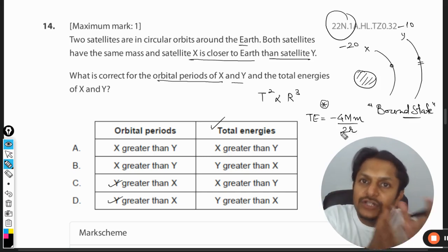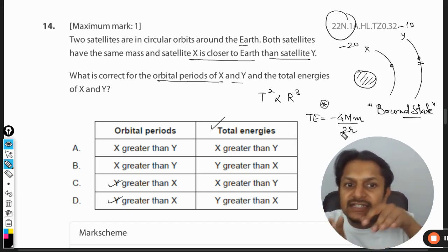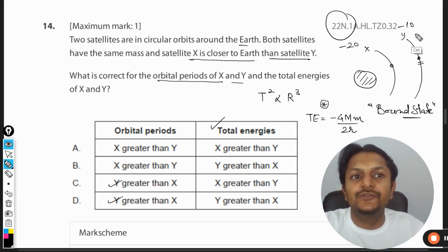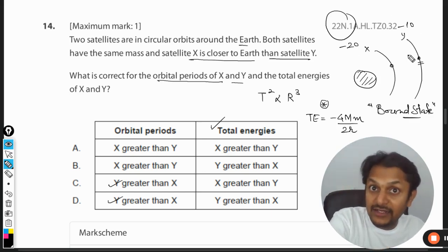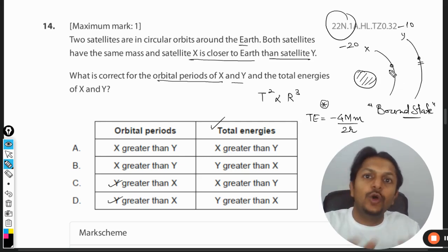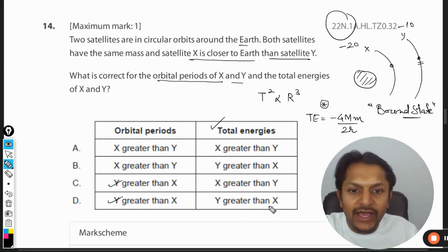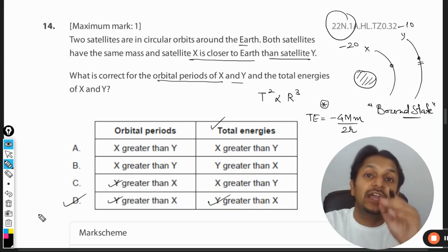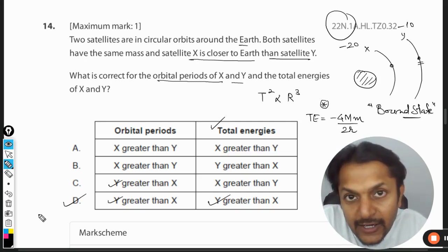So the magnitude has definitely reduced because R value is increasing - the magnitude is reducing. But because it is negative value, we can say this is negative 20, this is negative 10. So this negative 10 is more than negative 20. So Y is having more energy than X, so Y is greater than X. So D will be the correct answer in this question, my dear students.